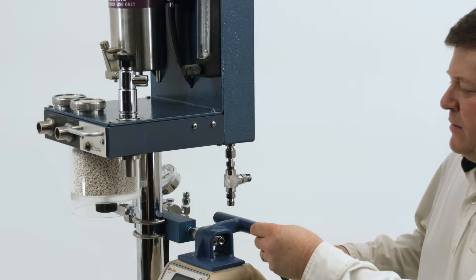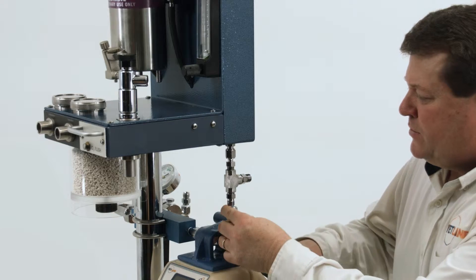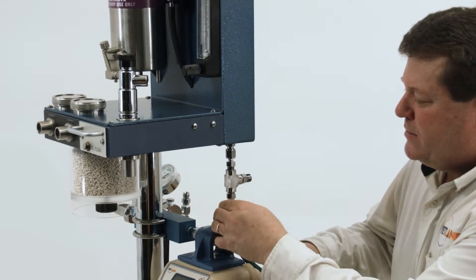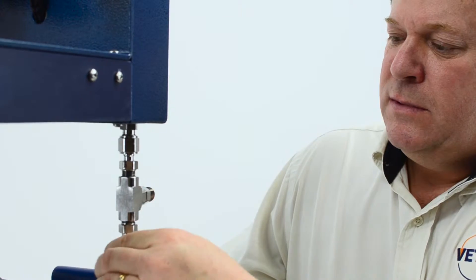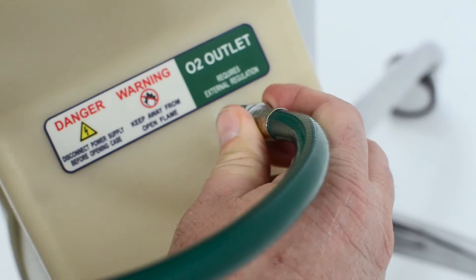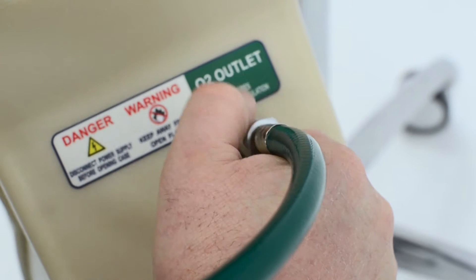Next we'll connect the oxygen concentrator hose to one inlet to the T and again this needs to be wrenched tight. There can't be any leaks here and the other end goes to the back of the unit.